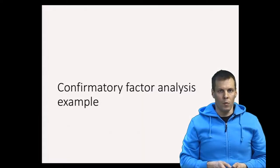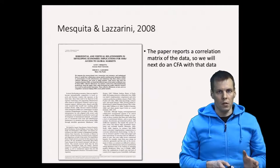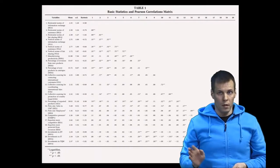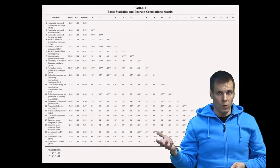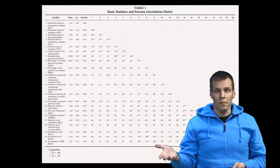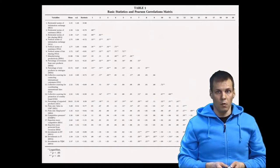Let's take a look at an empirical example of confirmatory factor analysis. Our dataset comes from Mesquita and Lazarini. This is a nice paper because they present a correlation matrix of all the data at the indicator level. So we can use their Table 1 to calculate all the confirmatory factor analysis and structural regression models that the article presents, and we will get for the most part the exact same results.